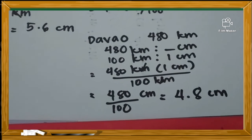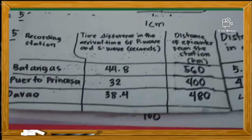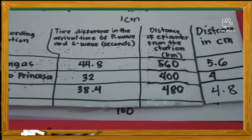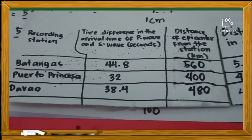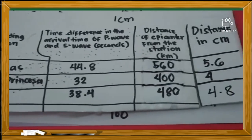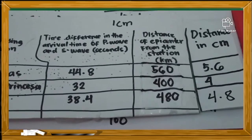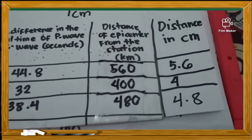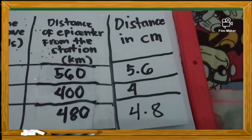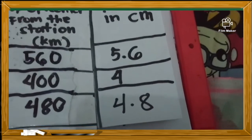Looking at our table, Batangas is 5.6 centimeters, Puerto Princesa is 4 centimeters, and Davao is 4.8 centimeters. These values will be used in our next activity, which is finding the epicenter of an earthquake using triangulation.